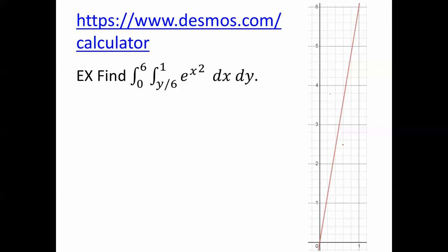X goes from y over 6 to 1. So this is the graph of x equals y over 6. In other words, y equals 6x. You could write it that way. This is the graph as x goes from y over 6 to 1, and as y goes from 0 to 6. That's the region we're integrating over in the xy plane.